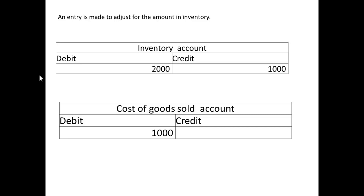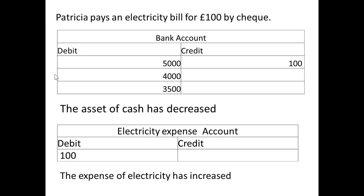Now we have to adjust the inventory — in other words, adjust the asset account because we no longer have it. We credit the inventory with £1,000, which is how much inventory we sold, and we debit a cost of goods sold account with £1,000.